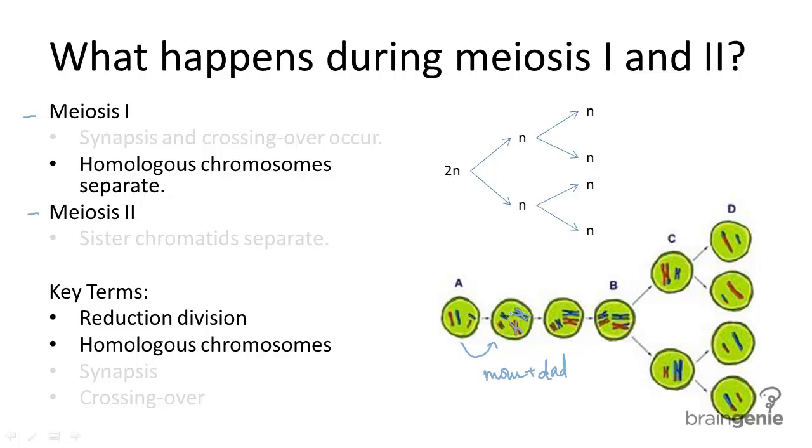For example, if we're talking about eye color, both chromosomes will have genes for eye color. But let's say the mom's chromosome has genes for green eyes, whereas the dad's chromosome has genes for brown eyes. This is the difference between homologous chromosomes.